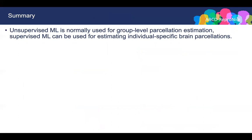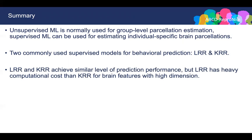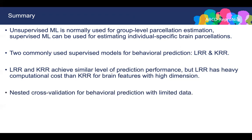In summary, supervised models can be used for estimating individual parcellations even though there is no training output. I have explained two supervised models — linear ridge regression and kernel ridge regression — for behavior prediction. Using the ABCD dataset, I showed that both achieve similar prediction accuracies, but kernel ridge regression has much less computational cost. I have also introduced the nested cross-validation prediction framework to handle limited data. Thank you, that's all for this talk.